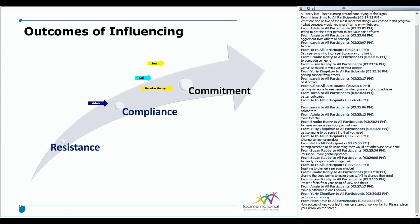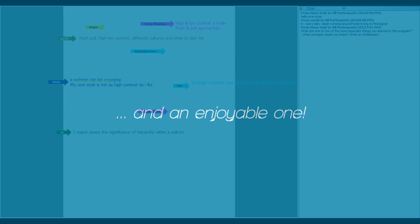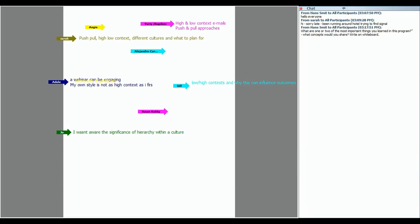How successful was your last influencing attempt? Adele got compliance; Brooke and Gill got commitment; Yuri got resistance; Joe got compliance; Alejandro is somewhere between compliance and commitment. And an enjoyable one — I can see yours, it's yellow, you've written on my blue section — get off!